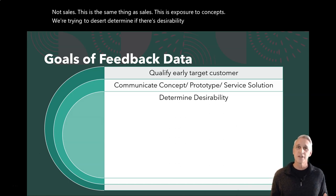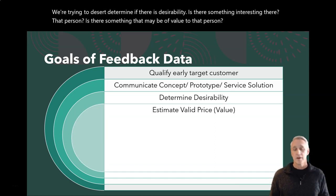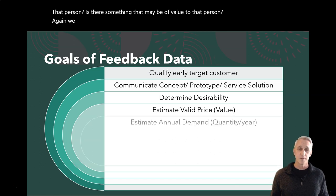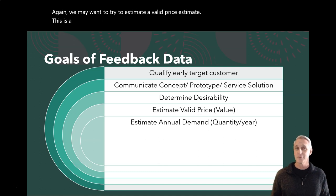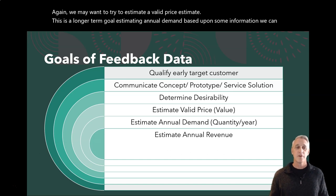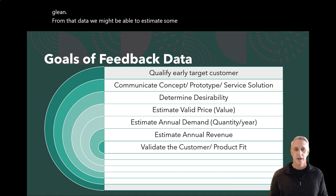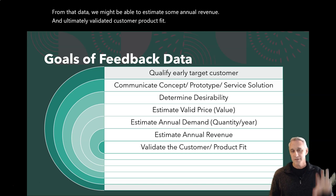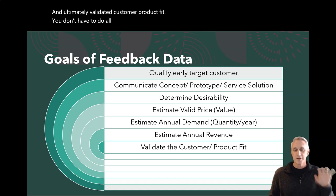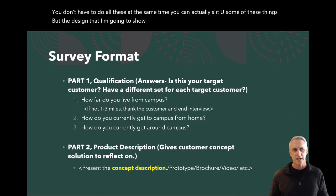Is there something interesting or of value to that person? We may also want to try to estimate a valid price. This is a longer-term goal — estimating annual demand based upon some information we can glean. From that data we might be able to estimate some annual revenue and ultimately validate a customer-product fit. You don't have to do all these at the same time — you can split up some of these things — but the survey design I'm going to show you actually hits many of these pieces.